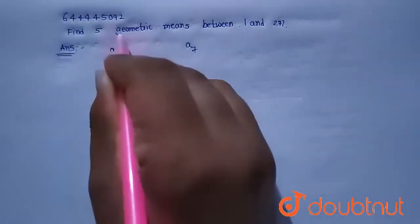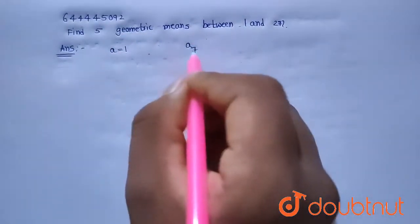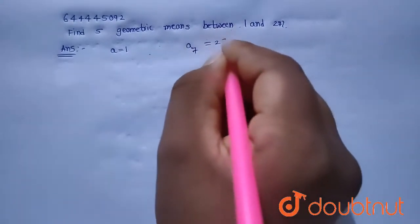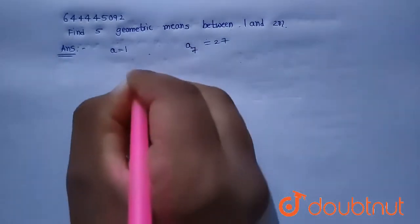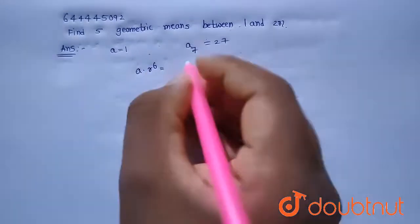So, given a₇ = 27. Now we know that a₇ is nothing but a × r⁶ = 27. Since a = 1, we need to find the common ratio, so r⁶ = 27.